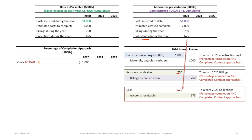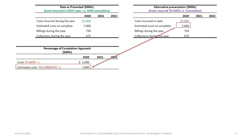So we debit Cash and credit Accounts Receivable for $675,000 to record the 2020 collections. The next step in determining gross profit: once we have cost to date of $1 million, we add the estimated cost to complete of $7 million. I'm putting together a list of variables — notice these as we progress, and you'll see how we use them to calculate the percentage of completion.